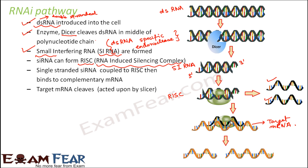Once the RISC complex with the single strand of RNA binds to the target mRNA, the target mRNA gets cleaved. This happens because of the slicer within RISC, which causes cleavage of the existing strand. As soon as it binds to the mRNA, the slicer slices it, resulting in two different pieces of mRNA. This cleaved mRNA is then recognized by the cell as aberrant and is destroyed.